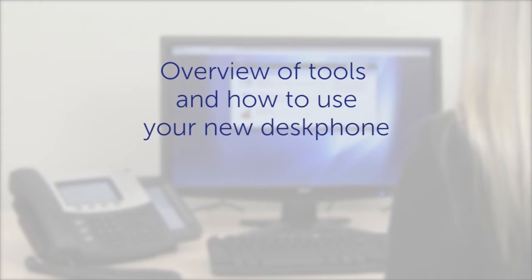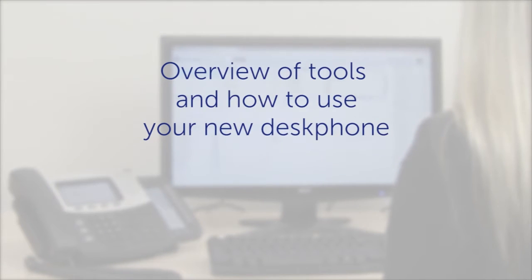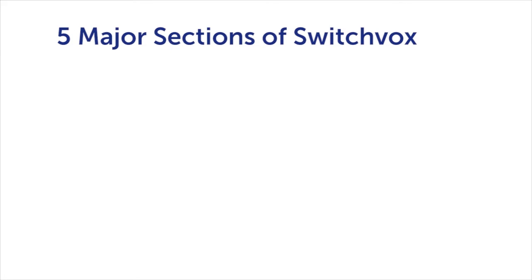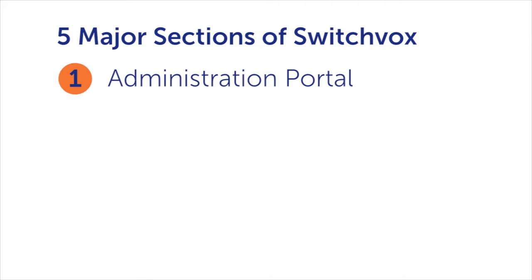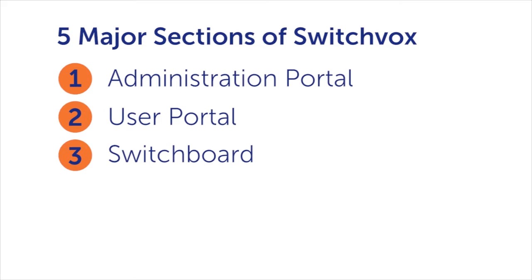Let's start by giving you an overview of what tools you have access to as a Switchbox user and show you the basics of how to use your new desk phone. Switchbox is organized into five major sections: the administration portal where your IT staff will manage your new system; the user portal where you will have access to manage some user features on your own, like creating your own conference room, changing which of your devices ring when calls come in, and much more; and the switchboard, which is our web-based productivity tool allowing you to control calls and get a bird's-eye view into your company's communications.